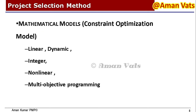When we call it the mathematical approach, we have constraint optimization models such as linear, dynamic, integral, non-linear, and multi-objective programming. This is completely mathematical and quite complex. When you really want to go deep and make the right decision in project selection, you may need to follow the mathematical model, but for that you really need a good amount of data and input parameters.